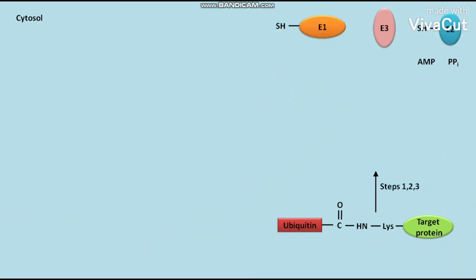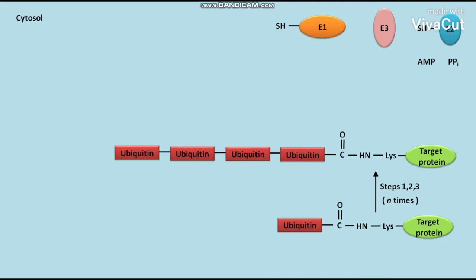This ubiquitin attached target protein undergoes steps 1, 2, and 3 for n times to produce a target protein to which n plus 1 number of ubiquitins are attached. This is the polyubiquitin chain attached to the target protein.